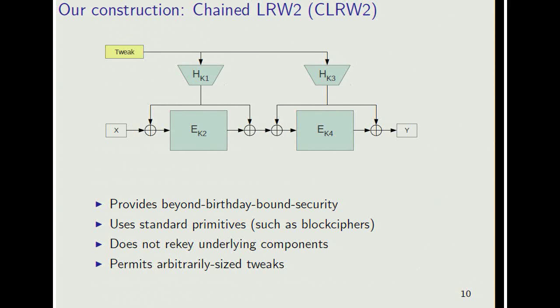Here's what we came up with. Chained LRW2 is essentially two rounds of LRW2. We use the same tweak for both rounds. This gives us beyond the birthday bound security guarantees. It uses standard primitives, in this case block ciphers and hash functions, and we don't need to re-key anything. We have arbitrarily wide tweaks, restricted only by the domain of the hash function, which in practice is not really a problem. We actually didn't go into this trying to analyze two rounds of LRW2. We found some construction that worked and tried to optimize it as much as we could, and then Tom said, hey, this is two rounds of LRW2.